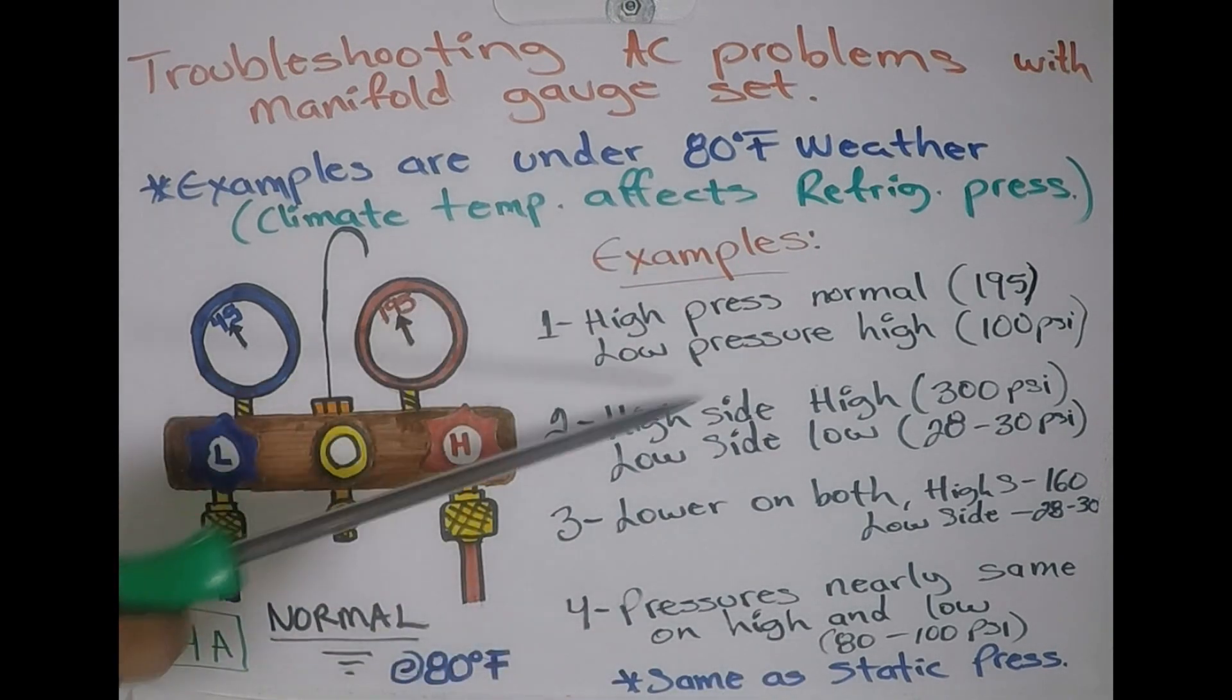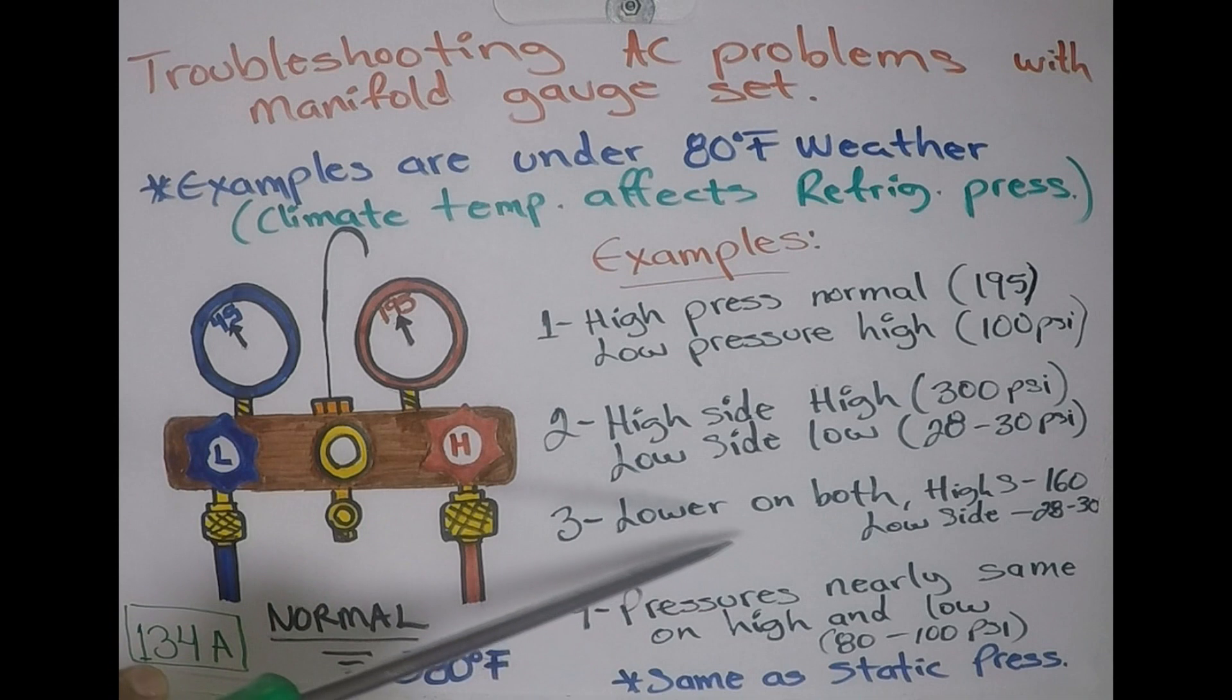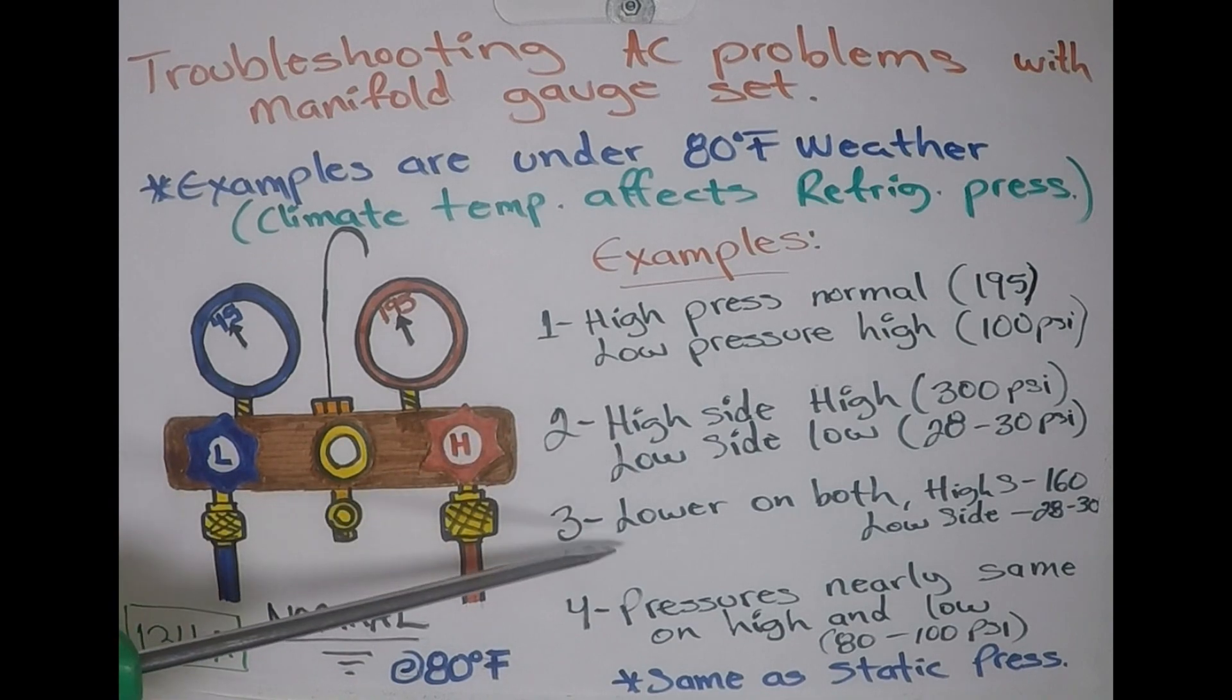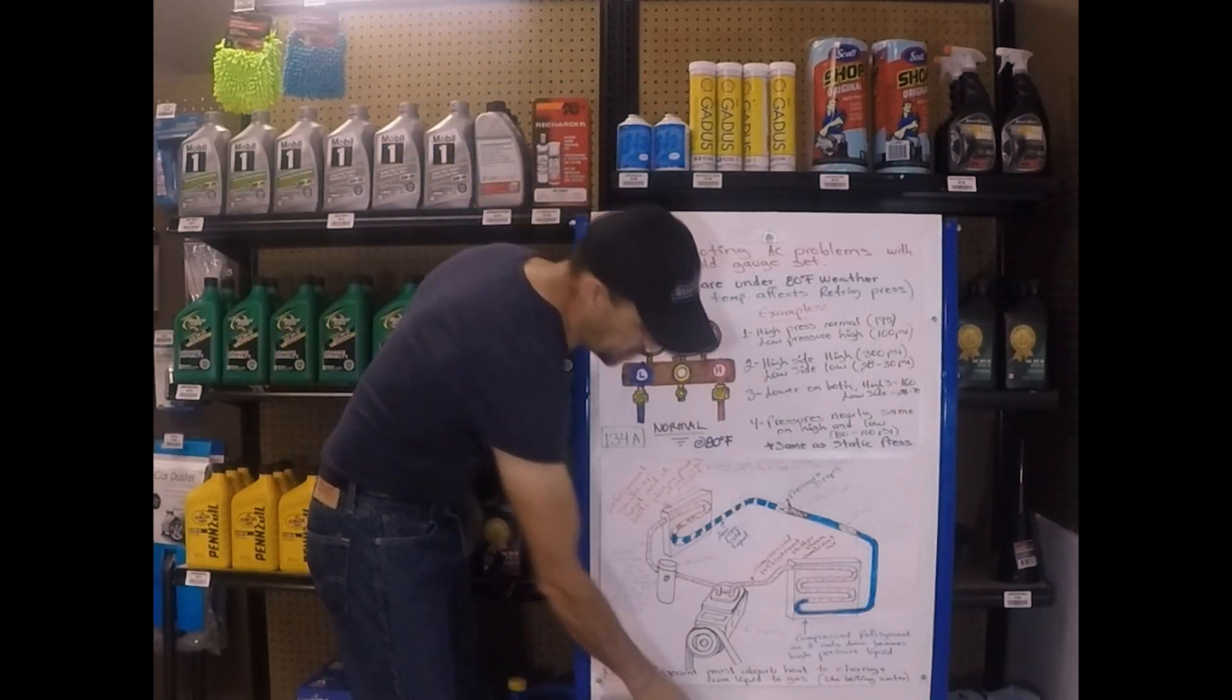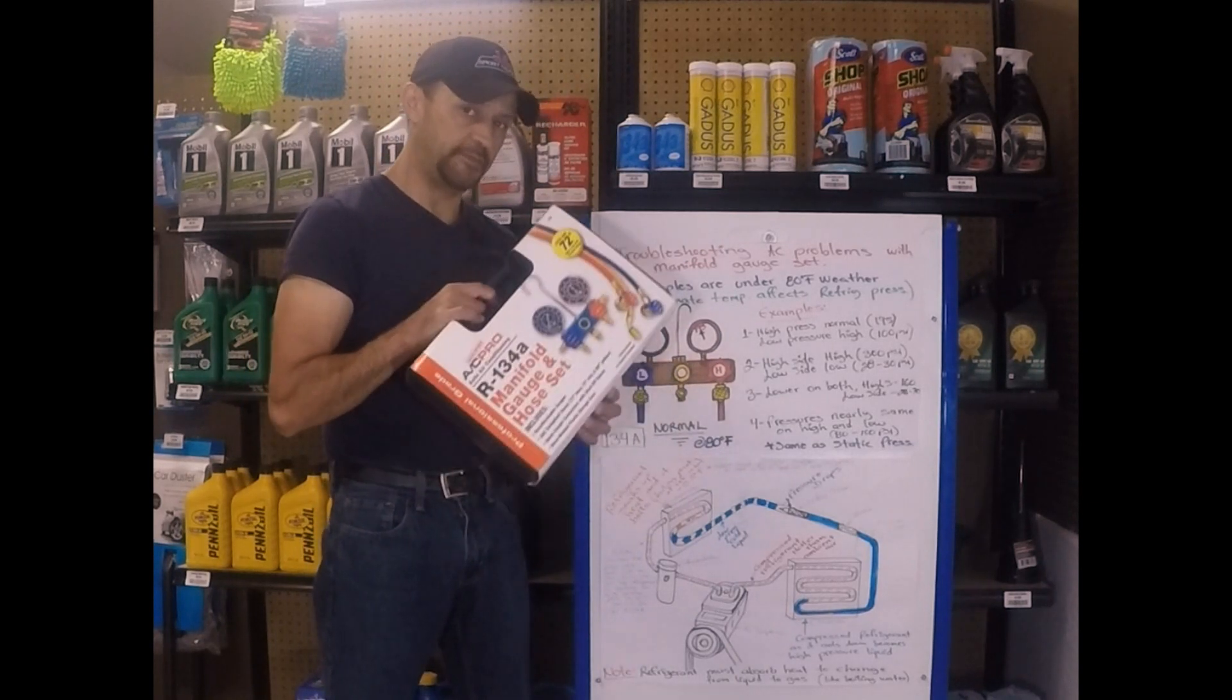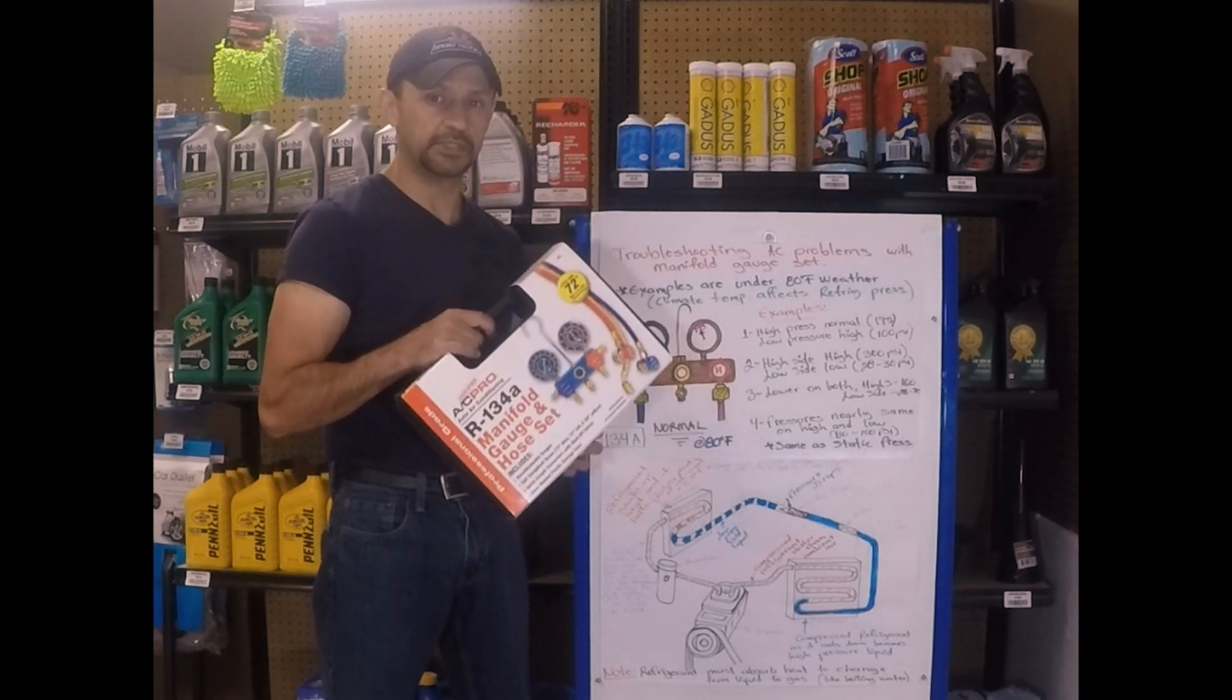These right here are four of the most common ones. Obviously, since it's a complex system, there are going to be more issues, but these four are the most common of them all. And there you have it. Now you know how to troubleshoot four of the most common air conditioning system issues using a manifold gauge set. Thanks for watching. See you next time.